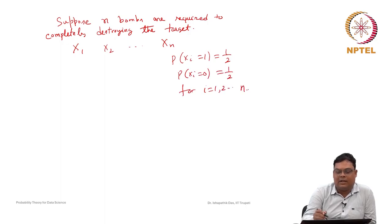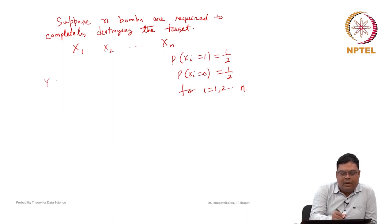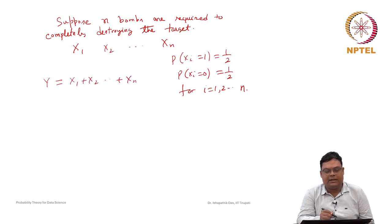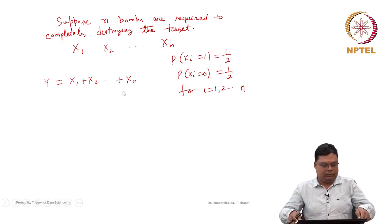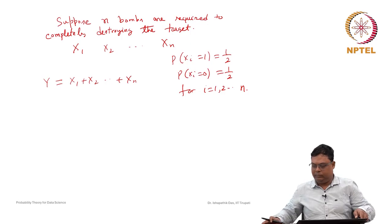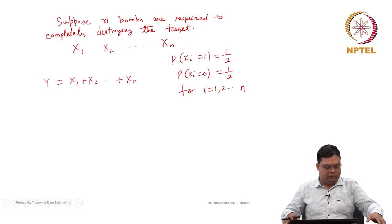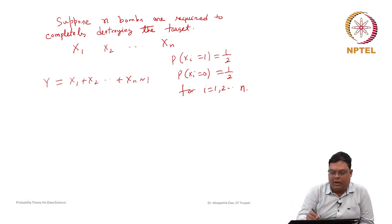As we discussed earlier, these are all Bernoulli distributions — all independently and identically distributed random variables with the same probability mass function. We will show that x1 plus x2 plus ... plus xn follows a binomial distribution with probability one half.